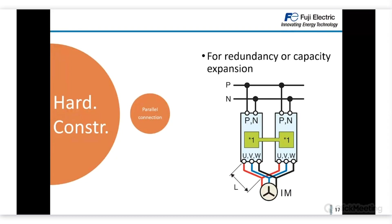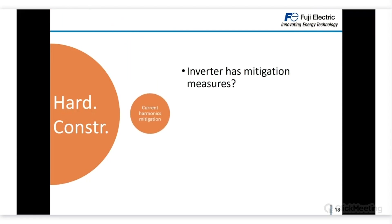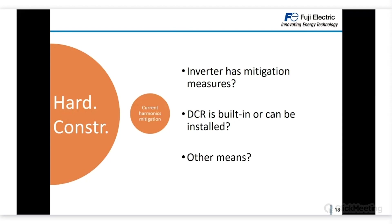Parallel connection is another consideration — VG1 unit and VG1 stack can be connected in parallel to the same motor, either to increase the available power range or to provide redundancy in case of inverter failure. For current harmonics mitigation, the DC reactor may be built-in as in HVAC and Aqua, or installed externally as in MEGA, ACE, or VG1 unit. Other means of mitigation are also available such as active front ends or active filters.